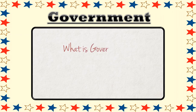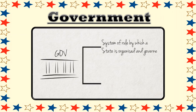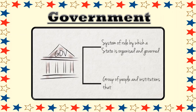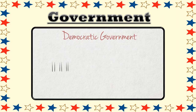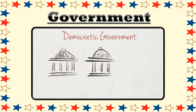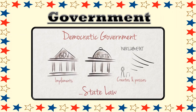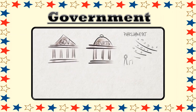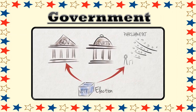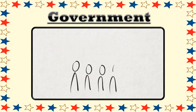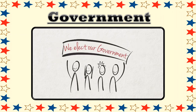Now to summarize: what is a government? Governance is the system of rule by which a state is organized and governed. A government is a group of people and institutions that manage and govern a state. Democratic government is characterized by the separation and balance of powers into three branches. In simple terms, the legislature creates and passes state law, the executive implements state law, and the judiciary enforces it. Representative democracies are formed by means of elections. Periodically held elections allow ordinary citizens to determine who should manage and govern the country and therefore represent their interests.